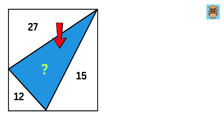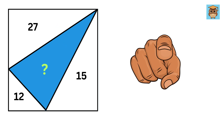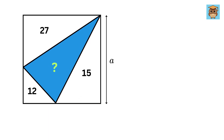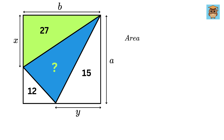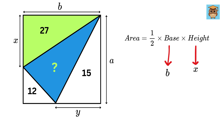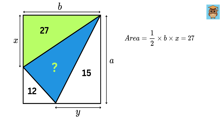Our job is to find the area of the blue region. Let us first label this side of our rectangle as a and this side as b. Then let us also label this side of this triangle as x and this side as y. We have four unknowns: a, b, x, and y. Consider this triangle — its area is half times base times height. The base is b and height is x, so the area is half of b times x. Since the area is 27, we get bx equals 54.